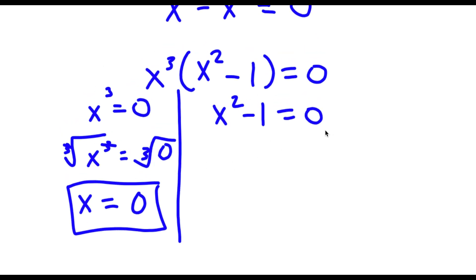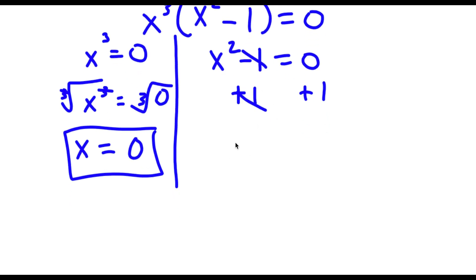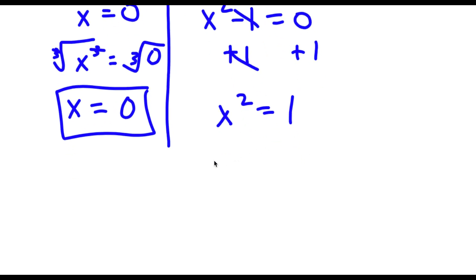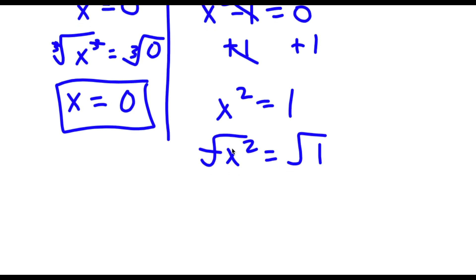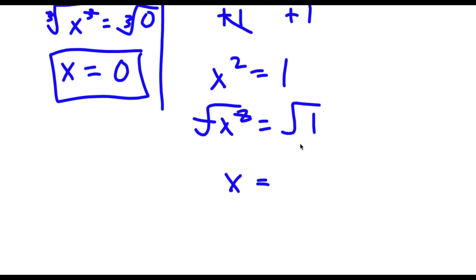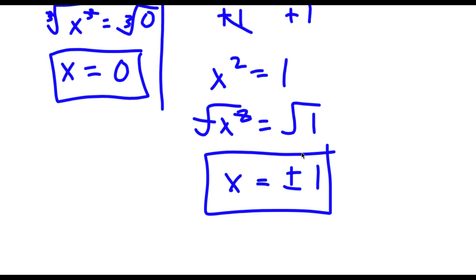Now I have x squared minus 1 equals 0. I'm going to add 1 on both sides. These two cancel out and I'm left with x squared is equal to 1. If I take the square root on both sides, I'm left with x is equal to positive or negative 1. So these are two more solutions.